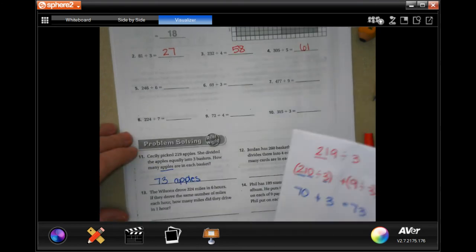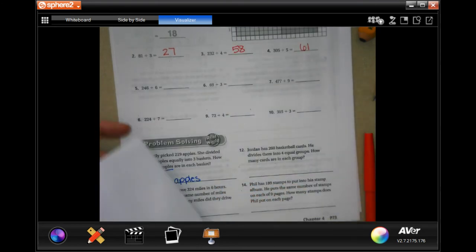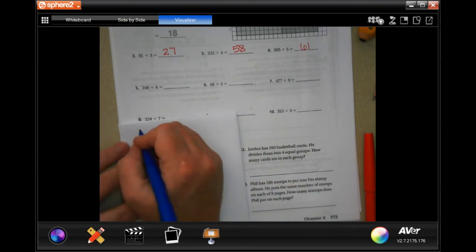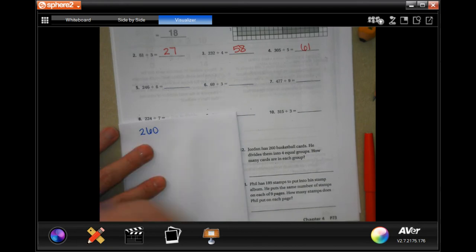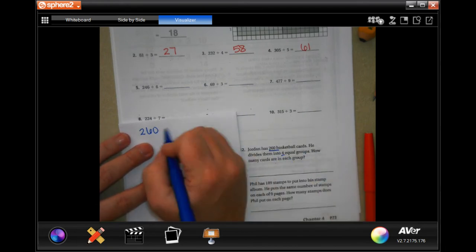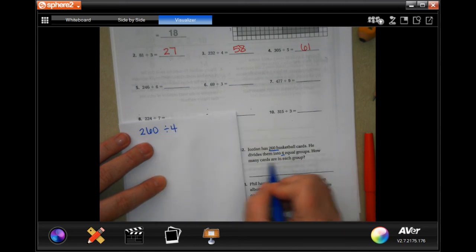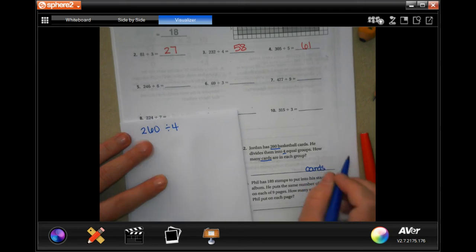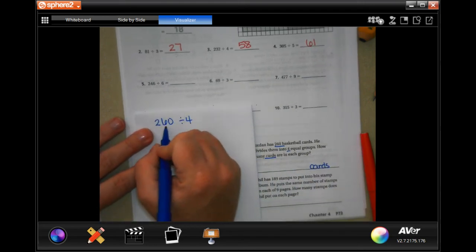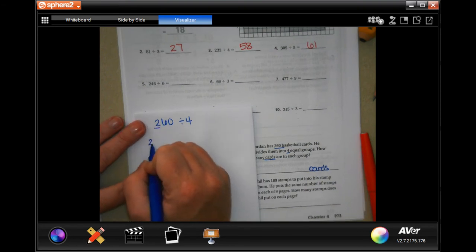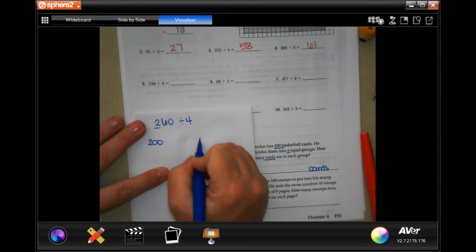Number 12 says Jordan has 260 basketball cards. He divides them into four groups. How many cards are in each group, be labeled in cards? Whatever our answer is, it's going to be in cards.